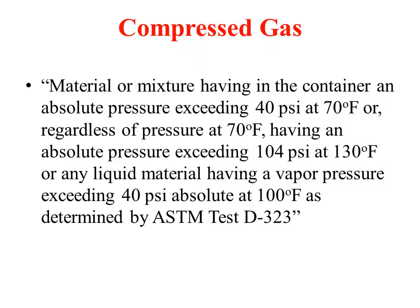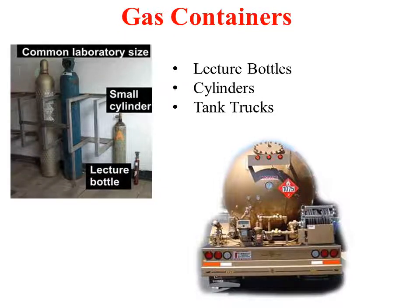How do you define a compressed gas? Compressed gas is a material or mixture contained inside a container at an absolute pressure exceeding 40 psi at 70 degrees Fahrenheit, or regardless of pressure at 70 degrees Fahrenheit, having an absolute pressure exceeding 104 psi at 130 degrees Fahrenheit, or any liquid material having a vapor pressure exceeding 40 psi absolute at 100 degrees Fahrenheit, as determined by ASTM test D323. ASTM stands for American Standard for Testing Materials.